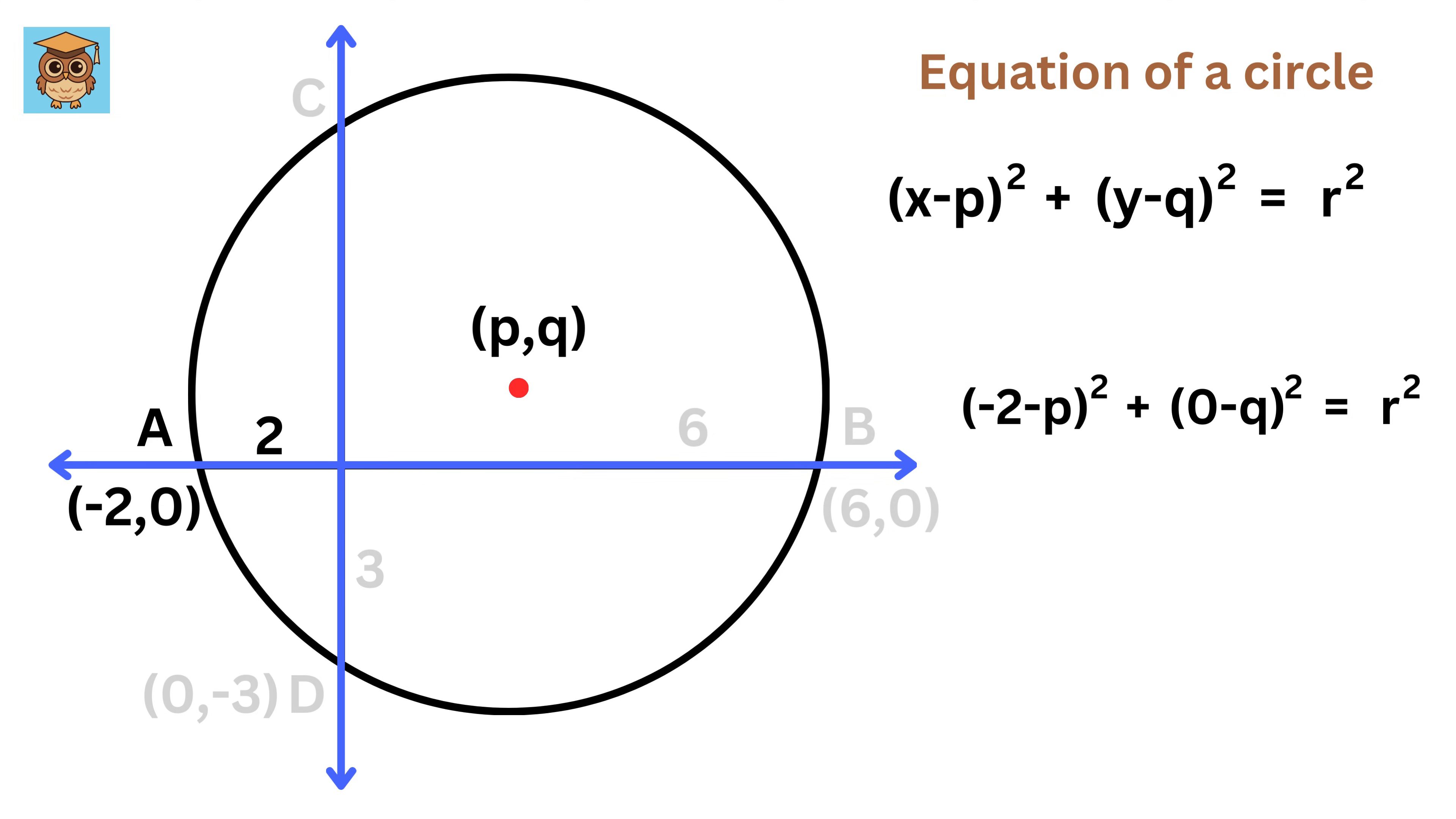For point A, the formula looks like this: negative 2 minus p squared plus q squared equals r squared, where r is the radius which we are solving for.